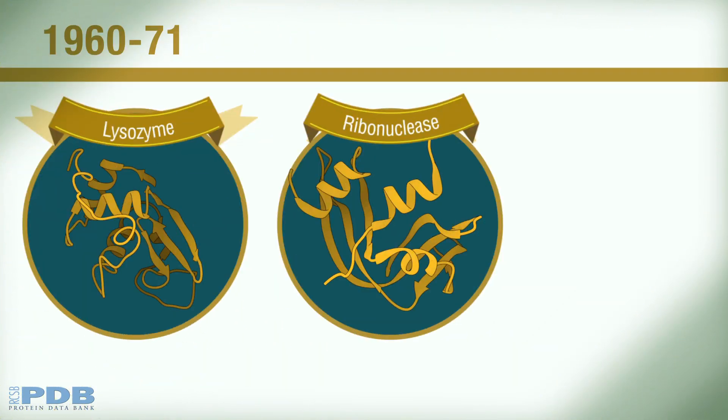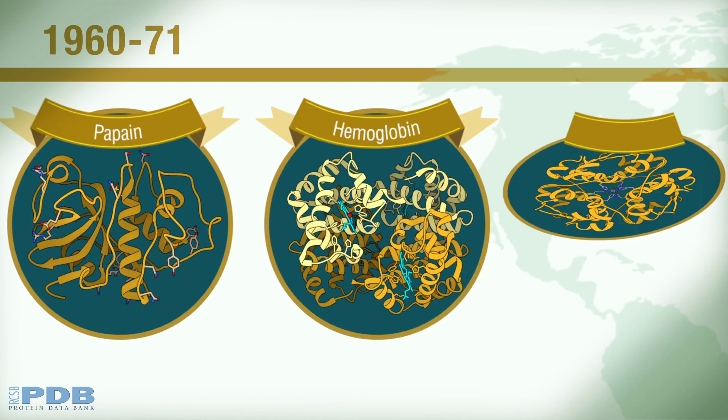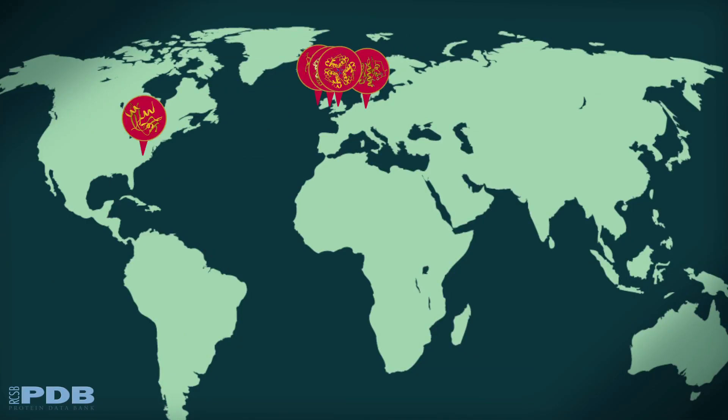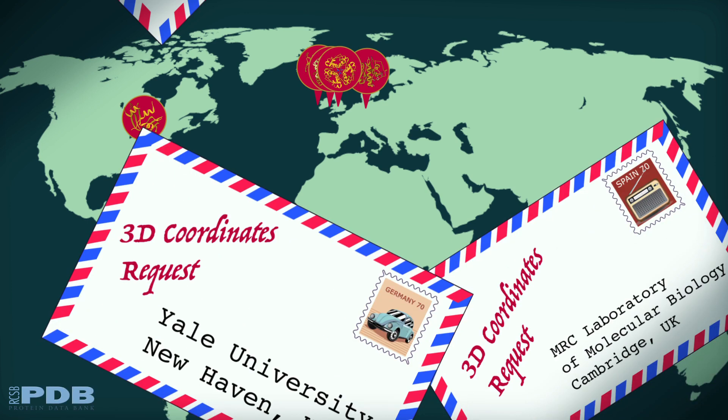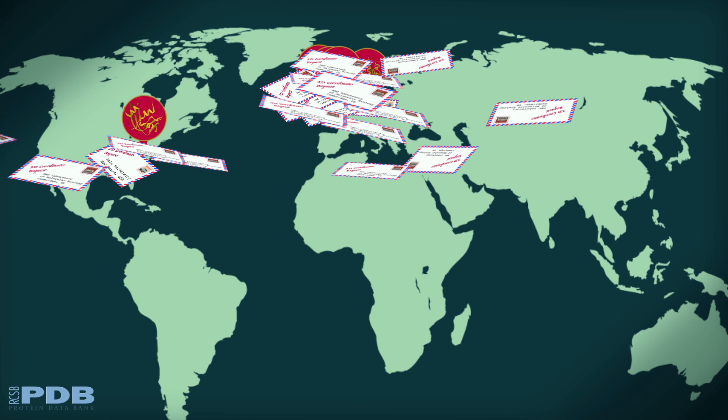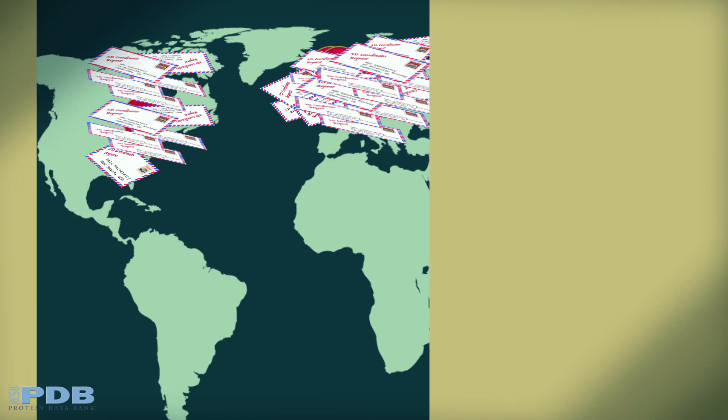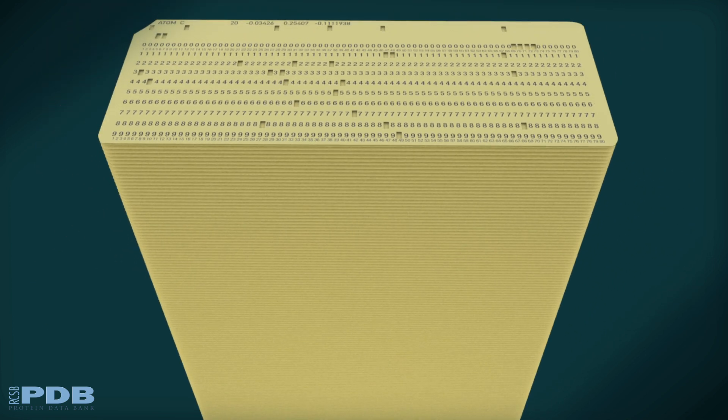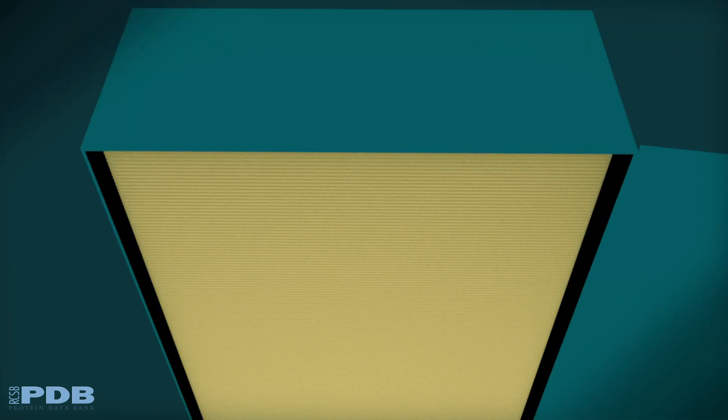More and more scientists started to study the 3D structures of proteins, and by the early 1970s, there were a dozen atomic structures solved in different labs. Researchers around the world were interested in exploring what these 3D structures revealed. However, data sharing was difficult in the time before the Internet. Early PDB structures were stored on paper punch cards, each containing information about one atom.